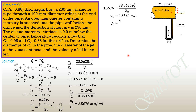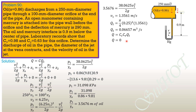Therefore, the theoretical discharge Q_theoretical = (π/4)(0.25)² × 1.3561 = 0.06657 m³/s. The actual discharge uses Q = C_c × C_v × Q_theoretical = 0.63 × 0.98 × 0.06657, giving an actual discharge of 0.04110 m³/s.